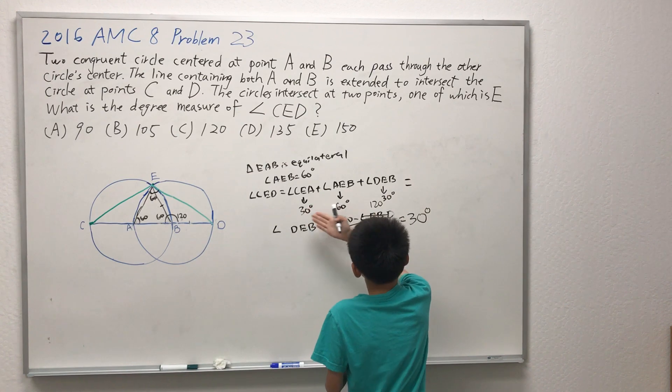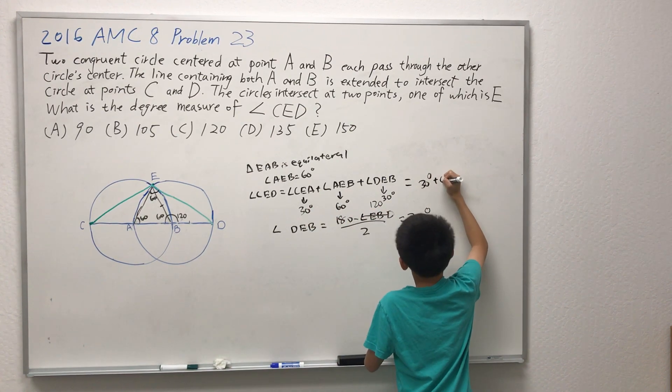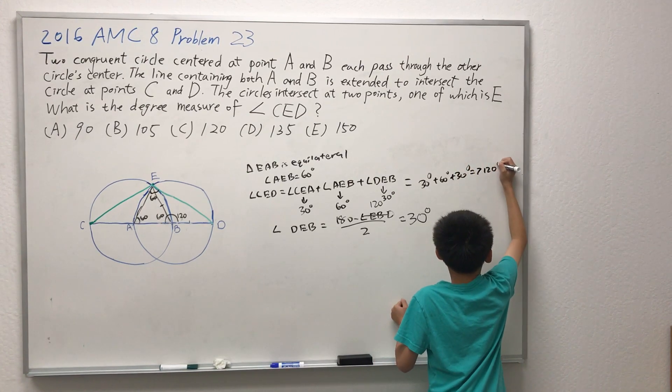The answer is just the sum of these numbers: 30 degrees plus 60 degrees plus 30 degrees, which is equivalent to 120 degrees.